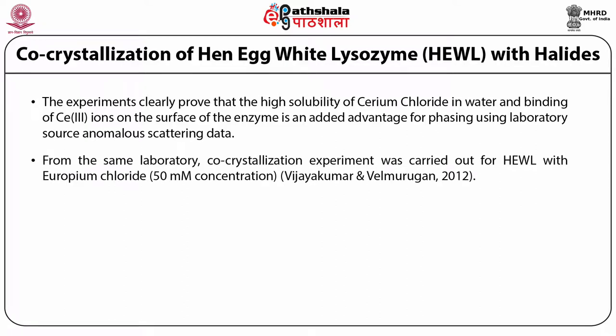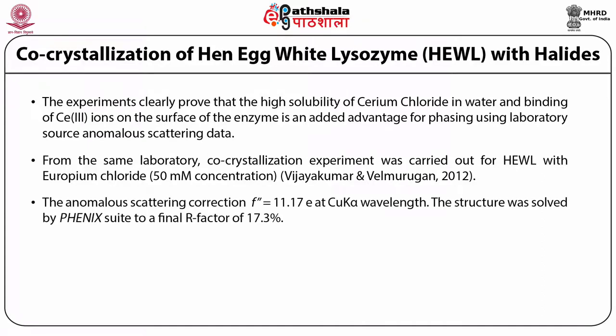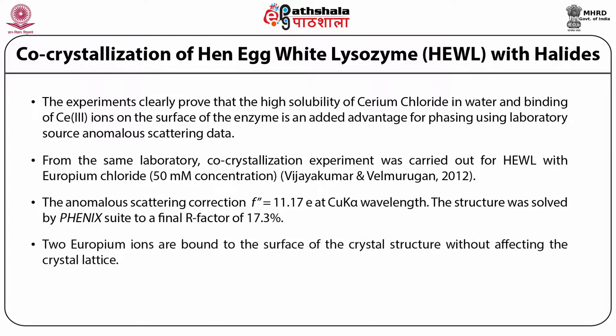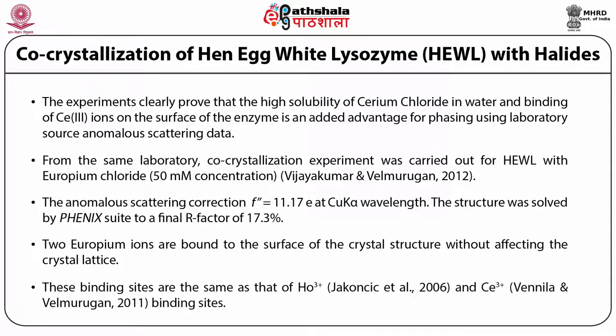From the same laboratory, a co-crystallization experiment was carried out by my scholar Vijay Kumar for hen egg white lysozyme with europium chloride at 50 millimolar concentration. The anomalous scattering correction F double prime is 11.17 electrons at Cu K-alpha wavelength. This structure was solved by PHENIX with a final R-factor of 17.3%. Two europium ions are bound to the surface of the crystal structure without affecting the crystal lattice. These binding sites are the same as the holmium and cerium binding sites reported by my other scholar Benila.